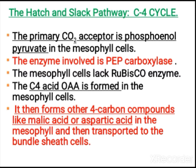In C4 plants, the primary carbon dioxide acceptor is phosphoenol pyruvate (PEP), and the enzyme involved is PEP carboxylase. The mesophyll cells lack the RuBisCO enzyme. The first C4 acid formed is oxaloacetic acid (OAA), which is found in mesophyll cells and is later converted into malic acid and aspartic acid. These plants show a special anatomy called Kranz anatomy.